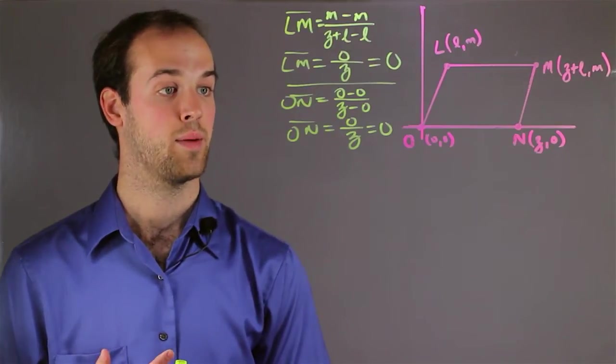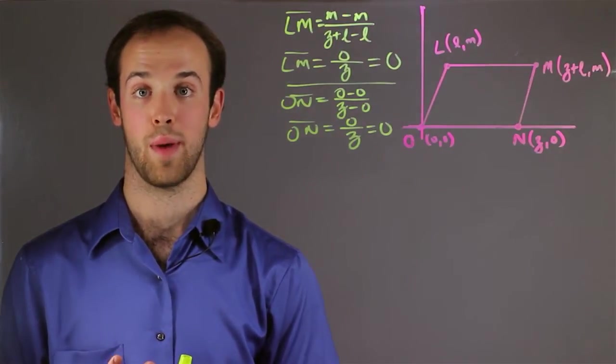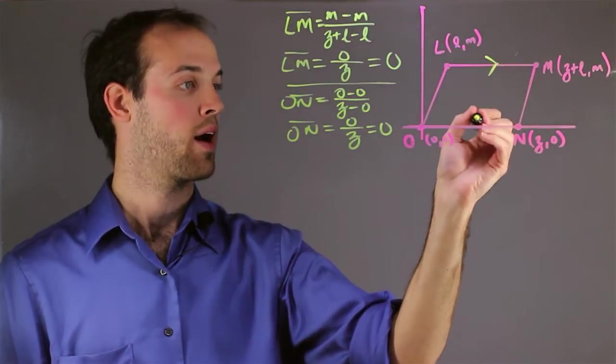So LM and ON have the same slope, therefore they must be parallel. So I'll go ahead and mark that on my graph.